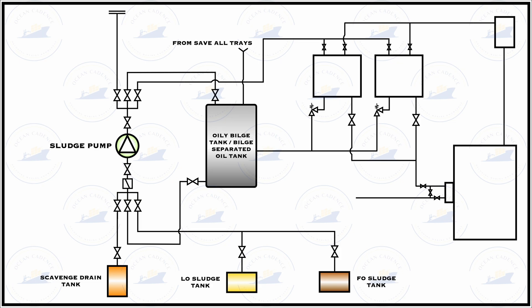On the discharge side of the sludge pump are the different elements for handling the sludge. The shore connection is helpful for landing sludge directly to shore, but on most vessels with longer routes this is not frequently possible and the sludge needs to be handled on board — that is where the other elements come in.